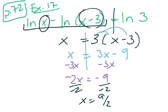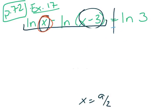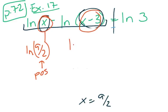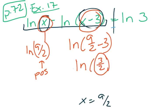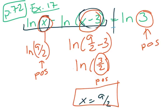So again, we need to check and make sure that we don't have any issues with this answer. If I put that 9 halves in place of this x, I get ln of 9 halves. This is a positive number, so that's okay. If I put 9 halves in this one, I get ln of 3 over 2, which is a positive answer. And this one already is positive, so there's no problem, and our answer is 9 over 2.